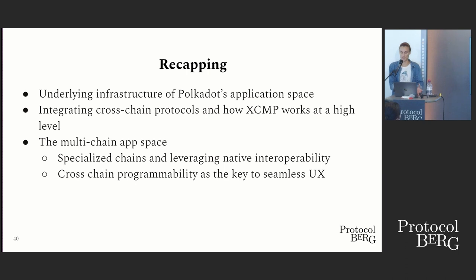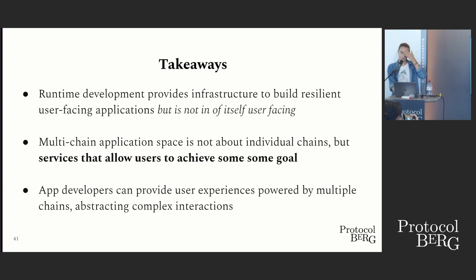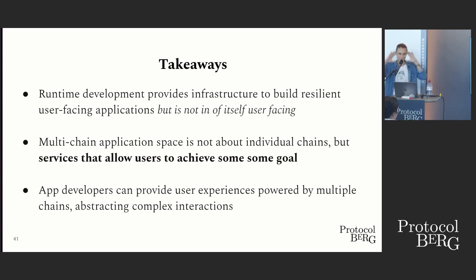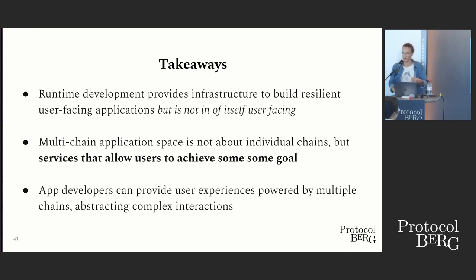The key thing is that specialized chains leveraging native interoperability should be abstracted — we want to create frameworks that abstract these layers. The choice of protocols we use is also a very good indicator of the type of user experience we can expect. We're really creating foundations for user-facing apps that can offer services powered across multiple chains. It's important to keep in mind what we want to enable human users to achieve, and to look ahead at what abstraction layers we can create to make user experiences as seamless as possible.